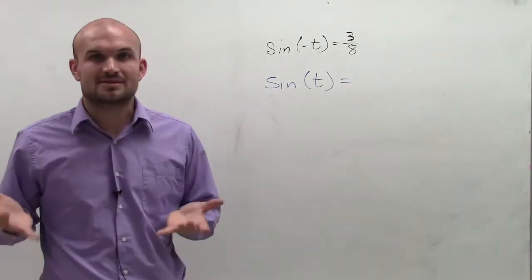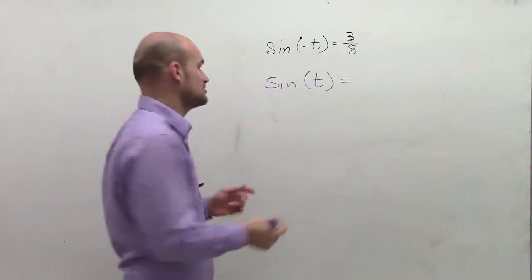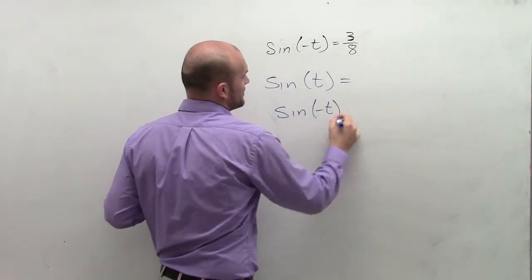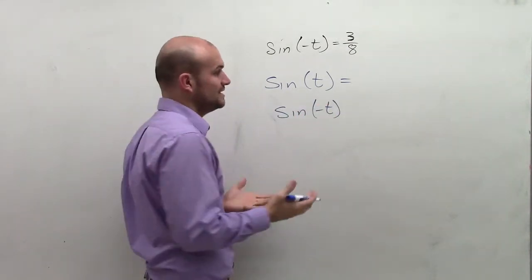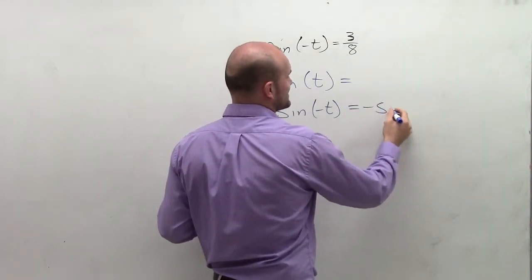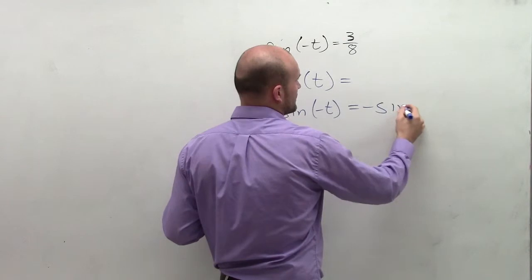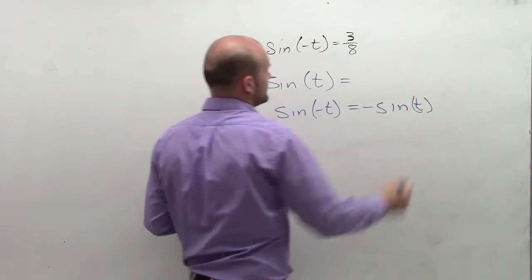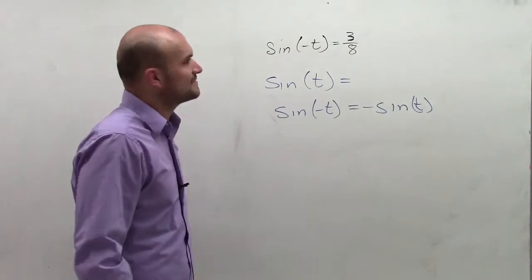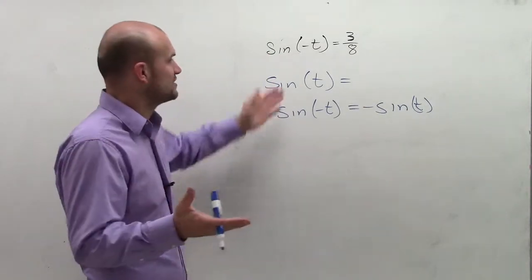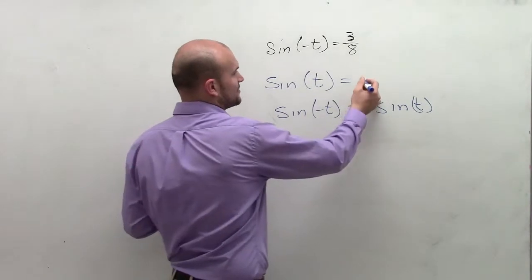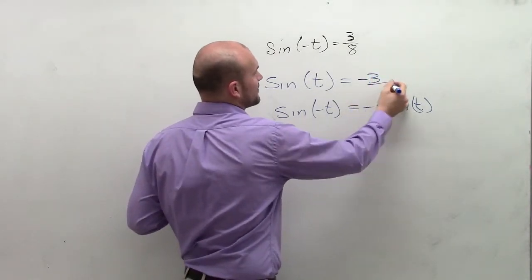One thing we need to remember about the sine function is that the sine function is odd, meaning that if I evaluate for my negative value of t, which would be a point on our circle, I am going to get in response the negative version of my sine of t. So therefore, if I have sine of negative t equals 3/8, and I want to determine what is sine of t, the value of that is going to be negative 3/8.